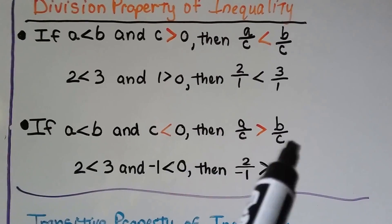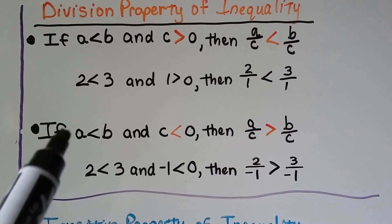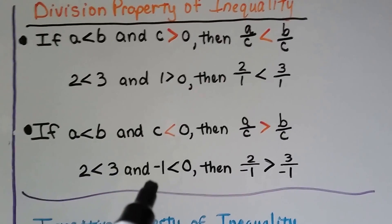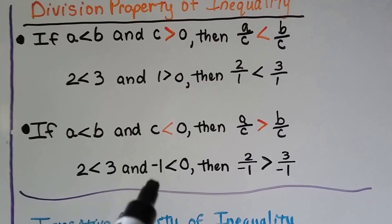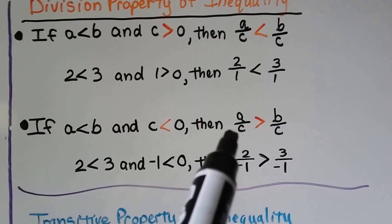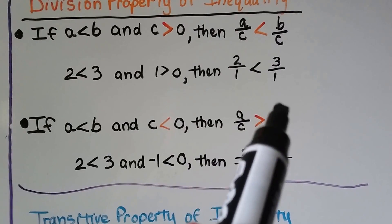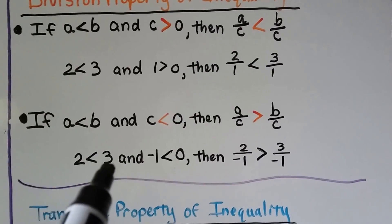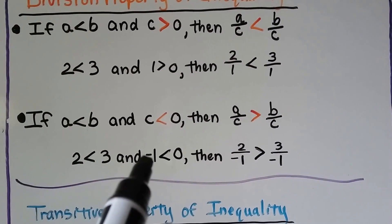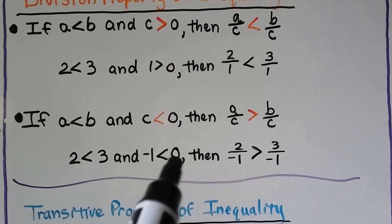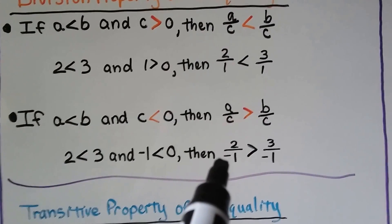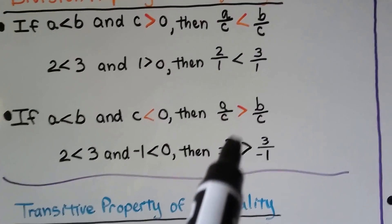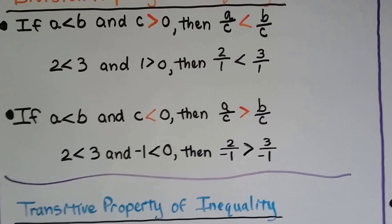For the case where signs reverse: if a is less than b and c is less than 0 — this time c = −1 — then a ÷ c is greater than b ÷ c. So 2 is less than 3, and −1 is less than 0, then 2 ÷ (−1) = −2 is greater than 3 ÷ (−1) = −3.